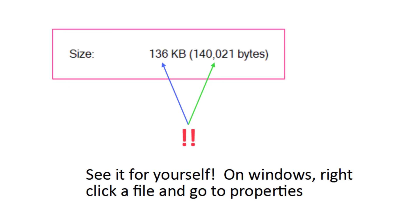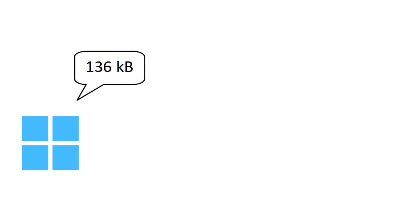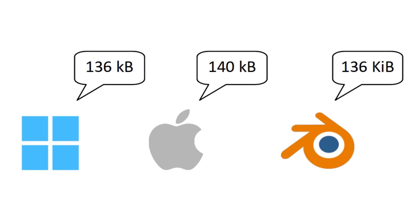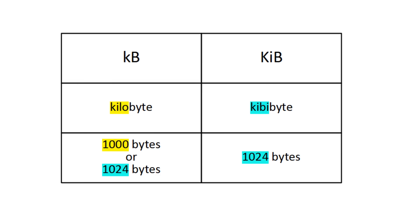But not everyone does it this way. On Apple, one kilobyte is exactly 1000 bytes, so that one would actually be labeled as 140. And on some applications like Blender, it would say 136 kibibytes, where a kibibyte is a unit unambiguously defined as exactly 1024 bytes.